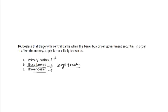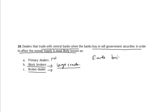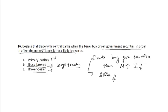In the case of primary dealers, they trade with the central bank when the bank buys or sells government securities in order to affect the money supply. For example, if the bank buys government securities then the money supply increases and the interest rate falls, whereas if the bank sells government securities then the money supply decreases and the interest rate in the market increases. So primary dealers are used for selling and buying government securities from the banks.